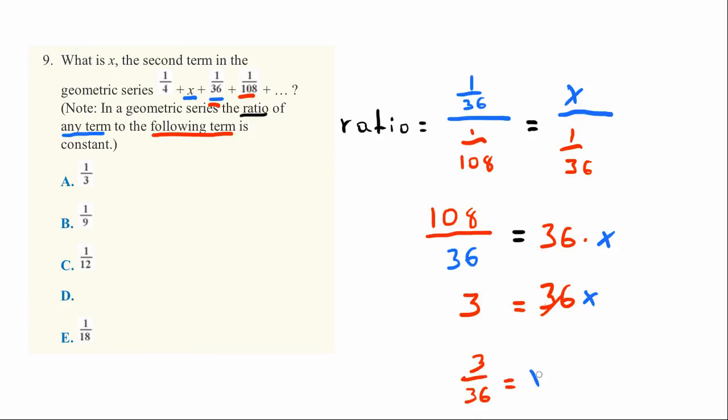We can simplify this down. We can divide each side by 3. And if we do that, this 3 becomes a 1, and 36 divided by 3 is 12. The correct answer is C, 1/12.